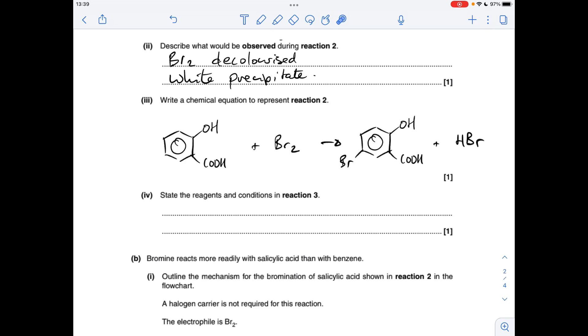The equation for that reaction looks like this. What's happening here is the hydrogen at this point is being substituted for one of the bromines in the BR2 molecule, so that generates the product and it also generates an HBR molecule.